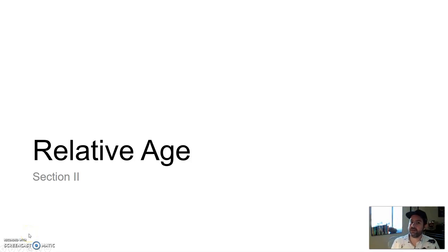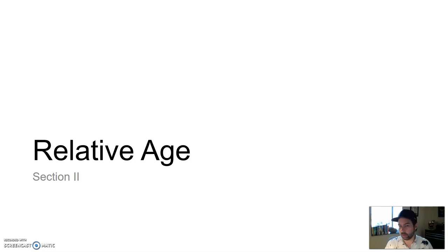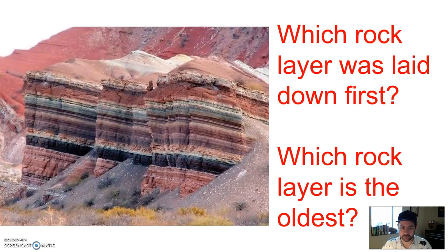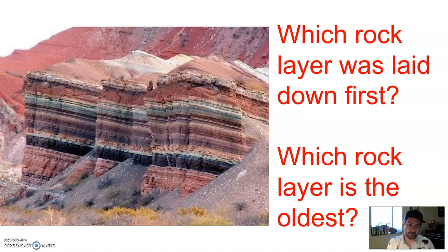Welcome back. Let's dive in a little bit to relative age. Let's first take a look at an outcrop of rock. A rock outcrop is just a section of some layers of rock that's sticking out that we can study.